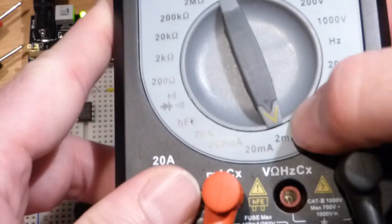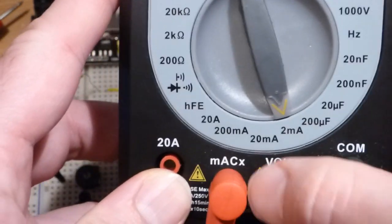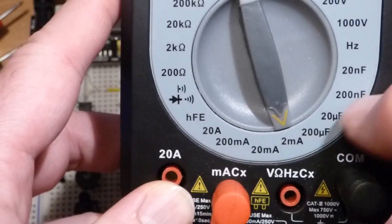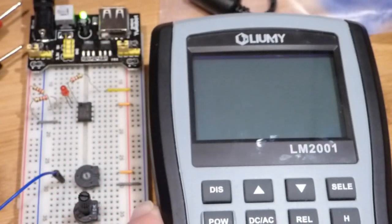Now, the next measurement we're going to take is a current measurement. To speed things up, I already did it. Set to 2 milliamps or less. That's my lowest setting. And I move the plug to the milliamp slot.